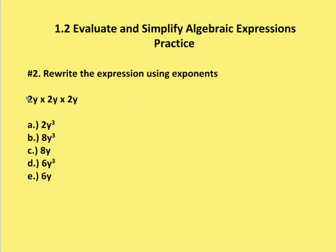So in this case if you multiplied only the coefficient you'd have 2 times 2 times 2 which is 8y and that's not the correct answer. Or if you multiply just the variable you'd have 2y cubed.